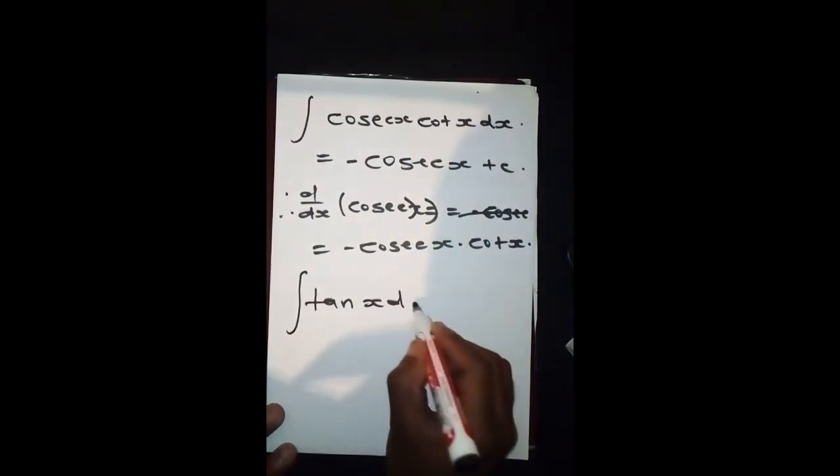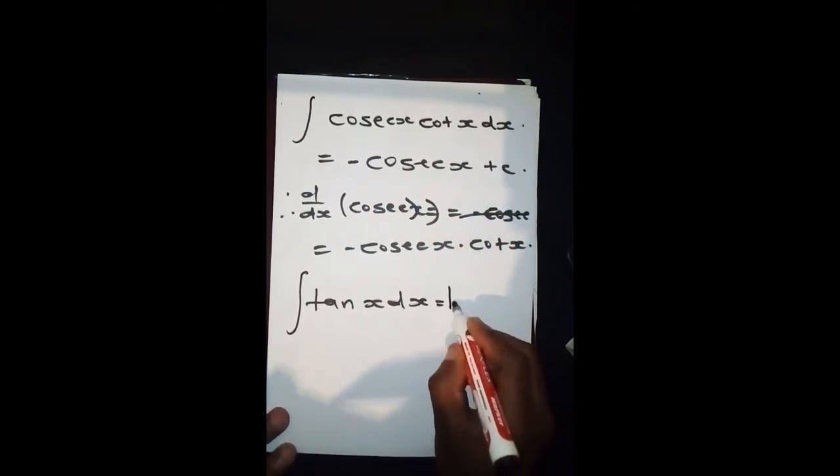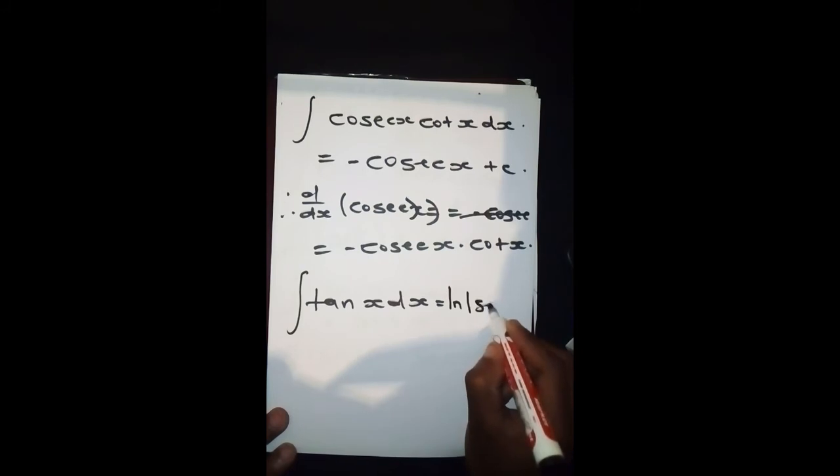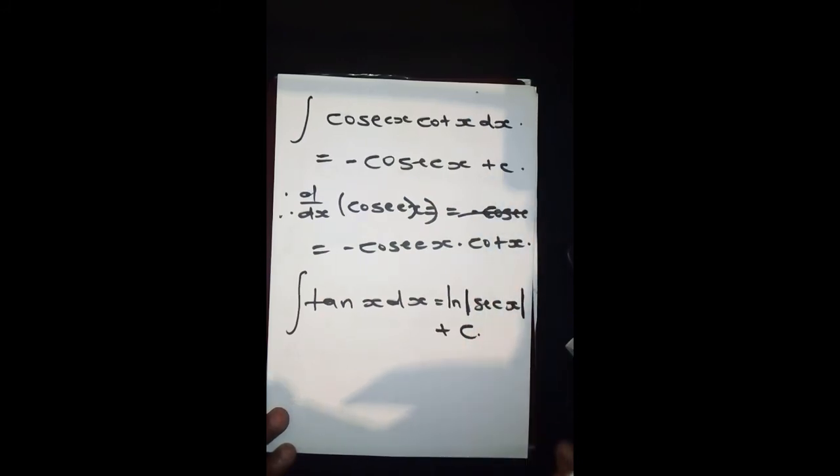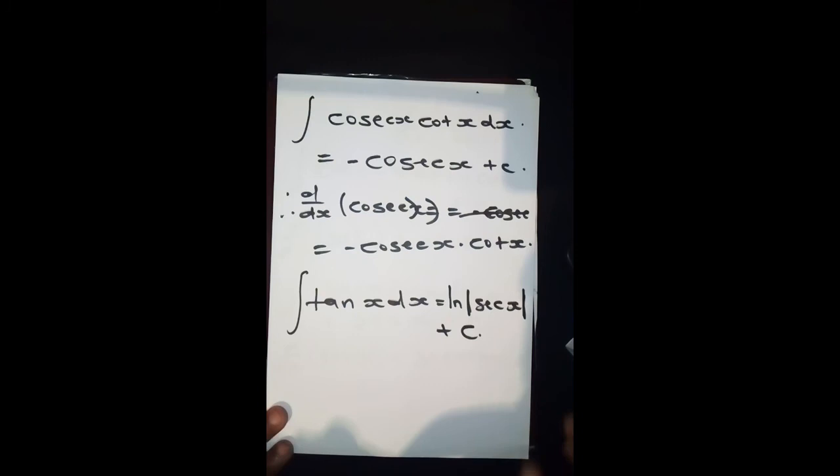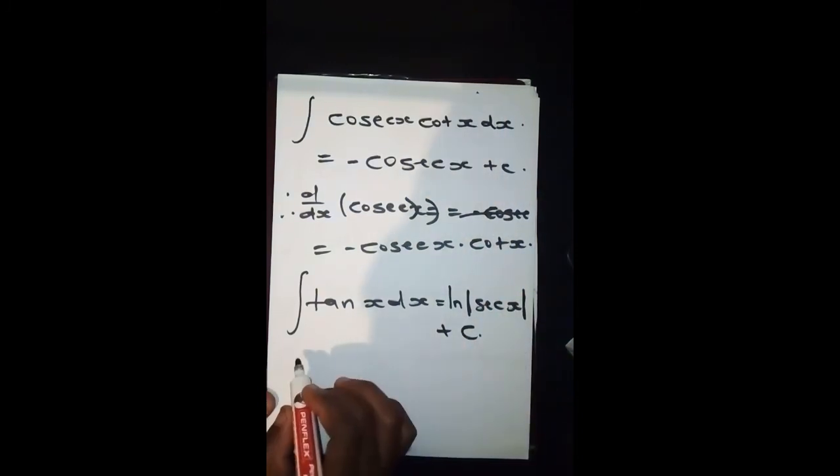It's tan(x)dx, which gives us ln|sec(x)| plus C. Mind you, this x is inside the modulus, meaning that whatever that's inside should be positive.